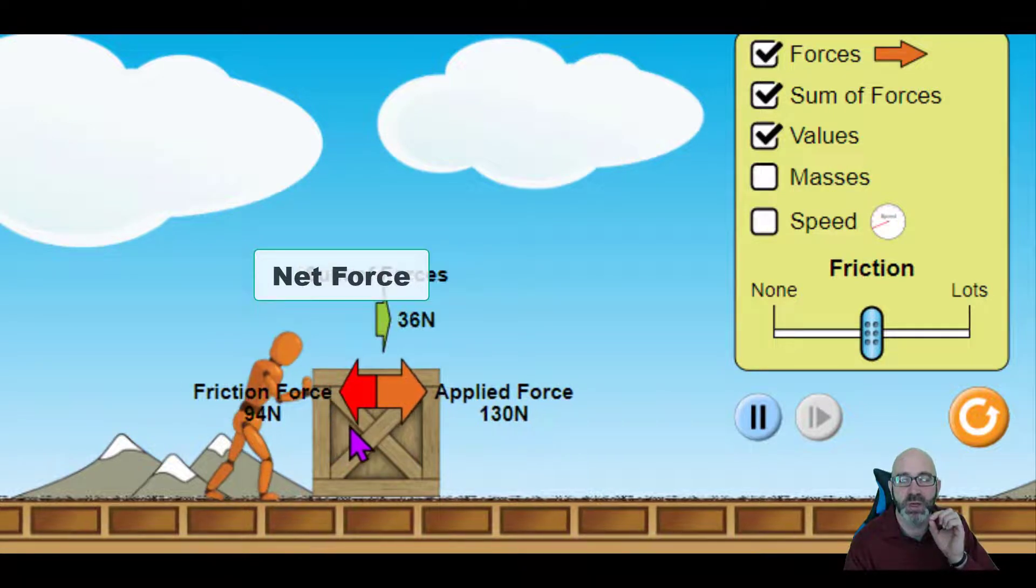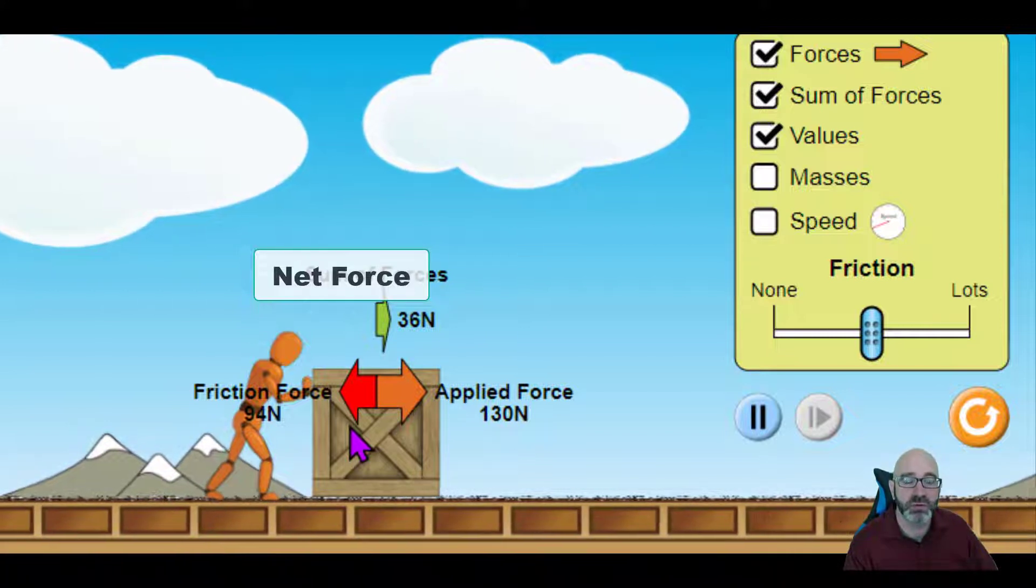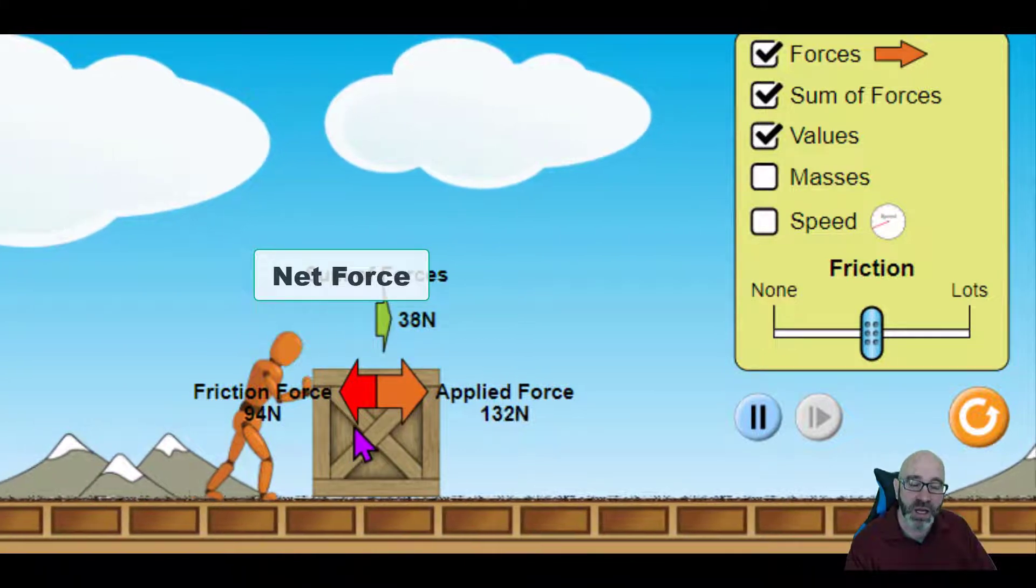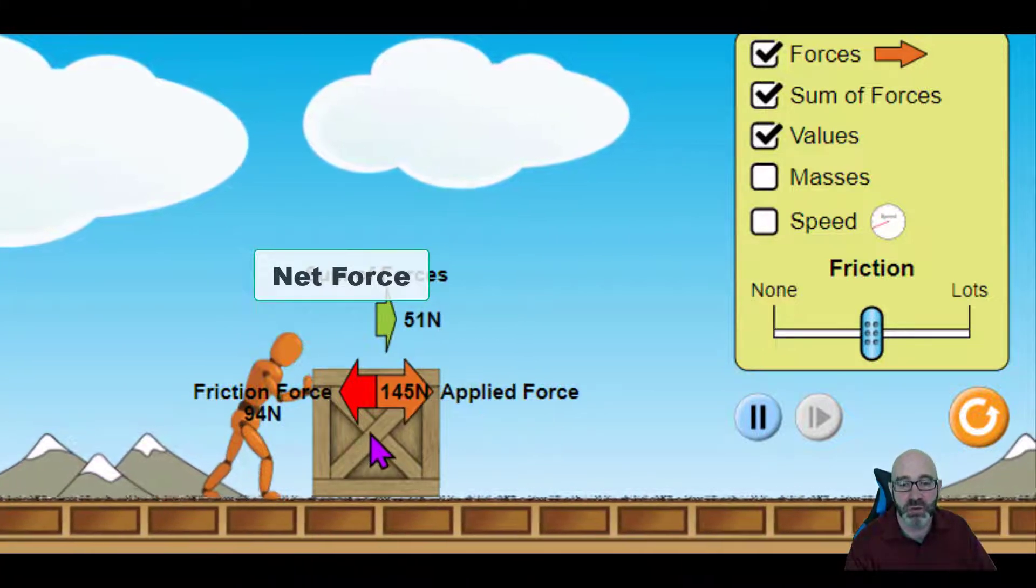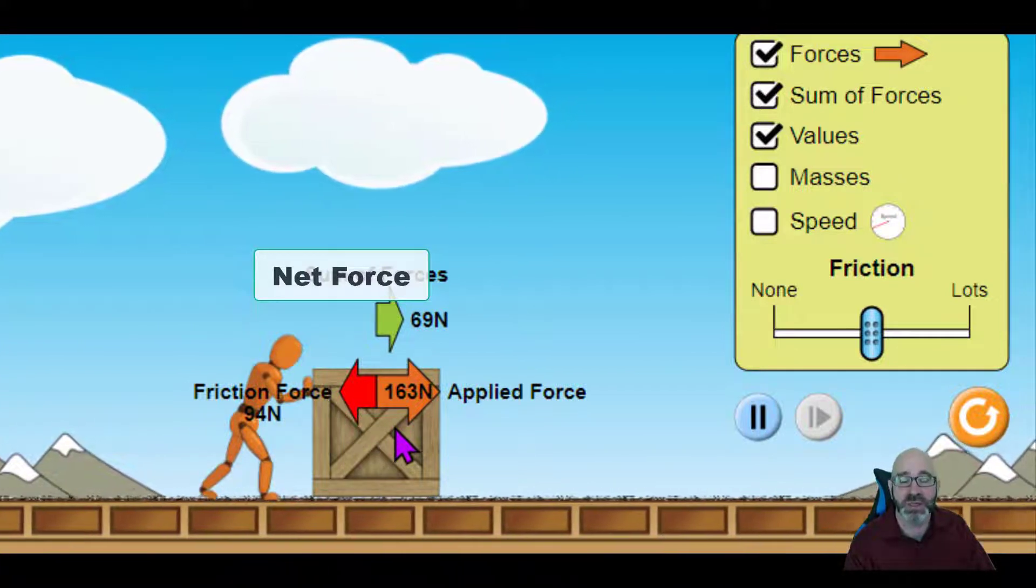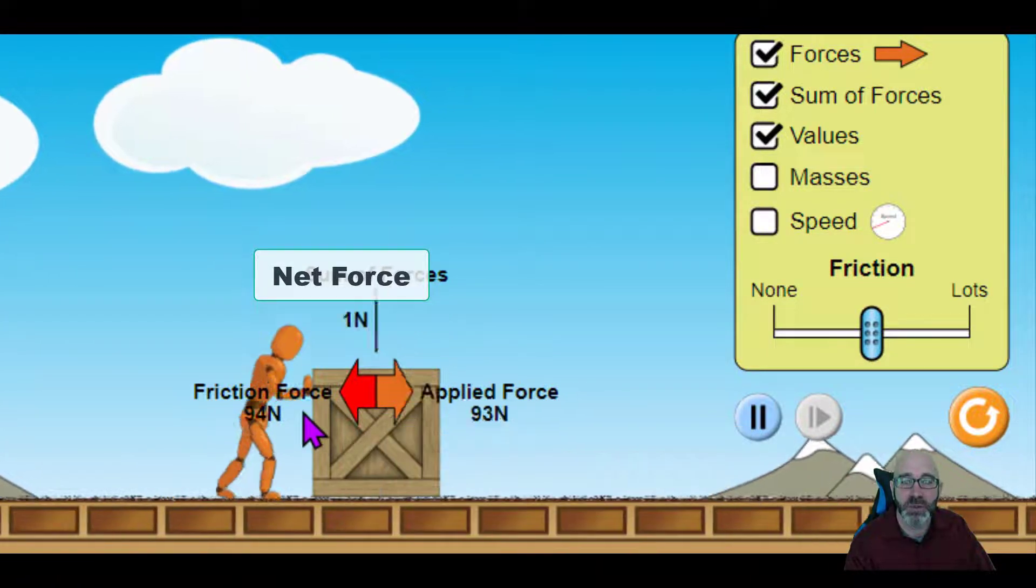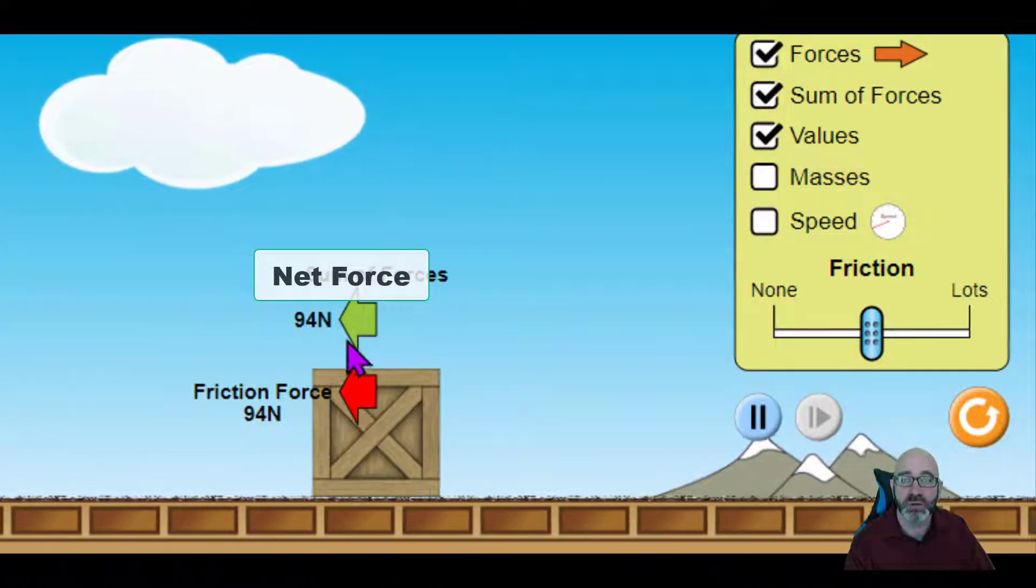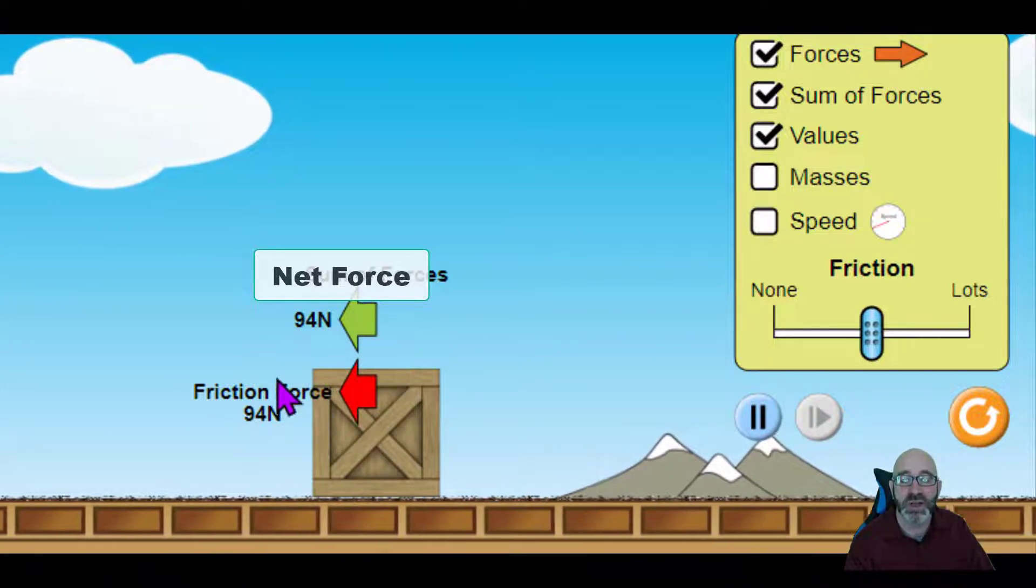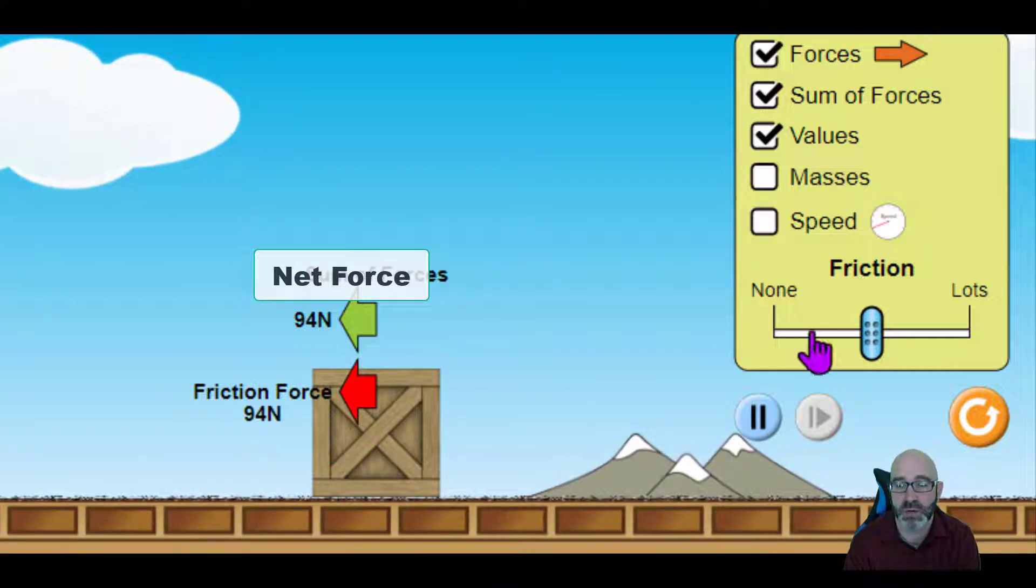Once we get to a point, all of a sudden, the orange figure is applying more force than the frictional force. And you have a net force in one direction, and the box begins to move. As long as that orange figure applies that force, the box continues to move. But what happens when it stops? The frictional forces are still there, and now the sum of the forces, or the net force, is in the opposite direction, and the box comes to a slowdown or a stop.